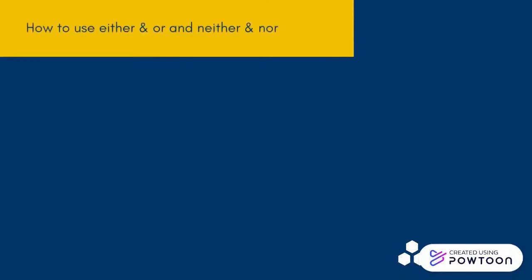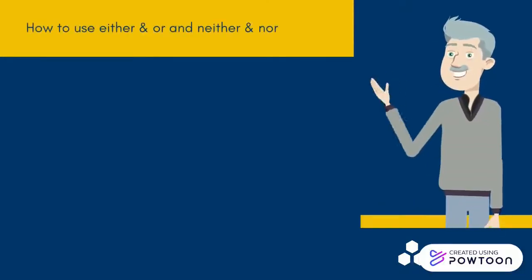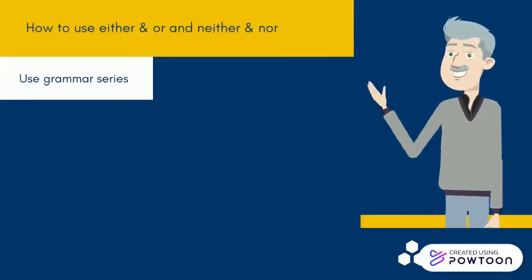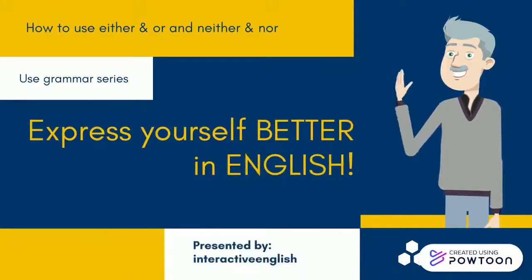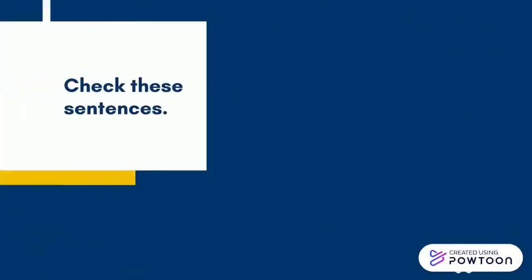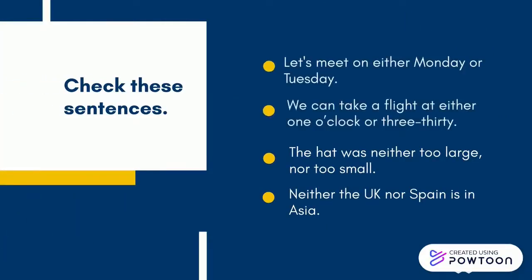How to use either and or, and neither and nor. Presented by Interactive English. Check these sentences. Let's meet on either Monday or Tuesday. We can take a flight at either 1 o'clock or 3:30.